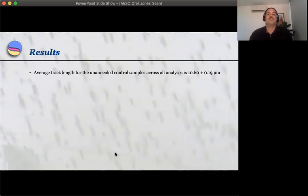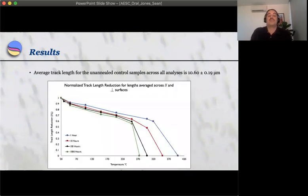The results of the study show that the average length for the unannealed control samples across all analyses is about 10.6 microns. Here we have a graph of track length reduction normalized to the mean length of the unannealed control samples. On the x-axis you have temperature in degrees Celsius. On the y-axis you have track length reduction. And each one of these points represents a single annealing experiment that has been averaged across the parallel and perpendicular surfaces.